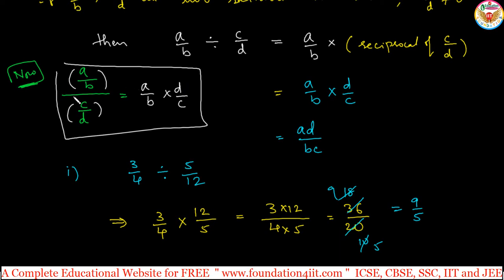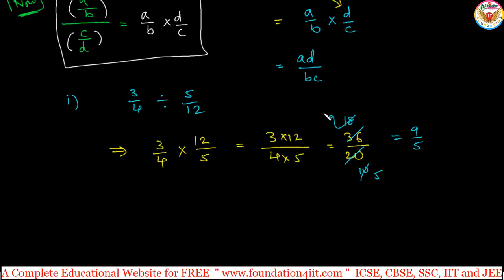Instead of writing like divided by c by d and all, just you can write into symbol and second fraction. The second rational number should be a reciprocal, just it. There is a small chain in this. So any examples also will be same, right? And for example.